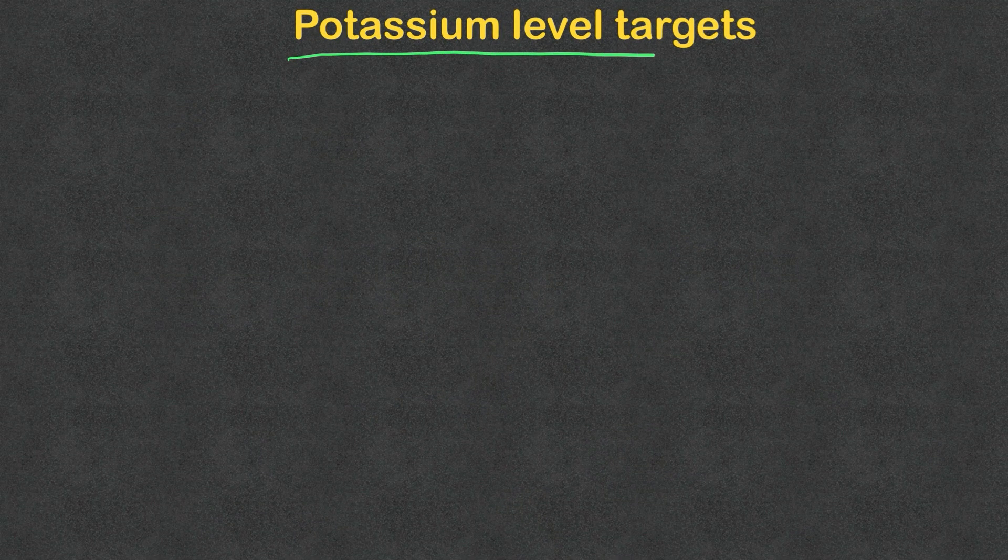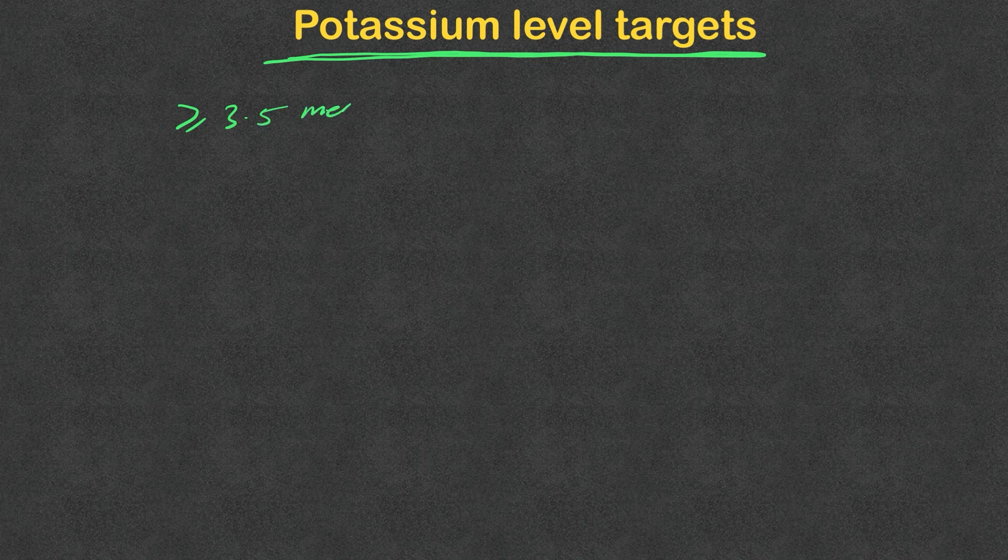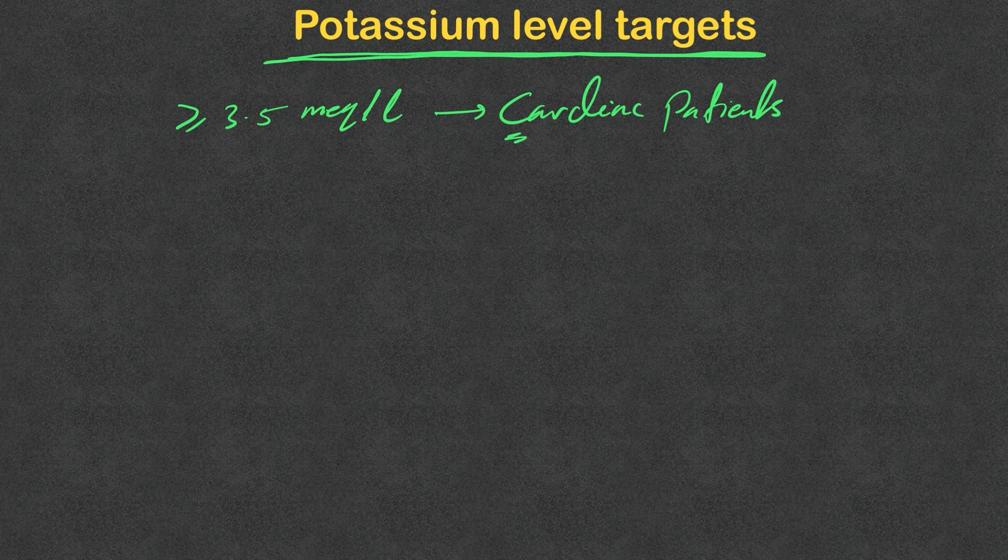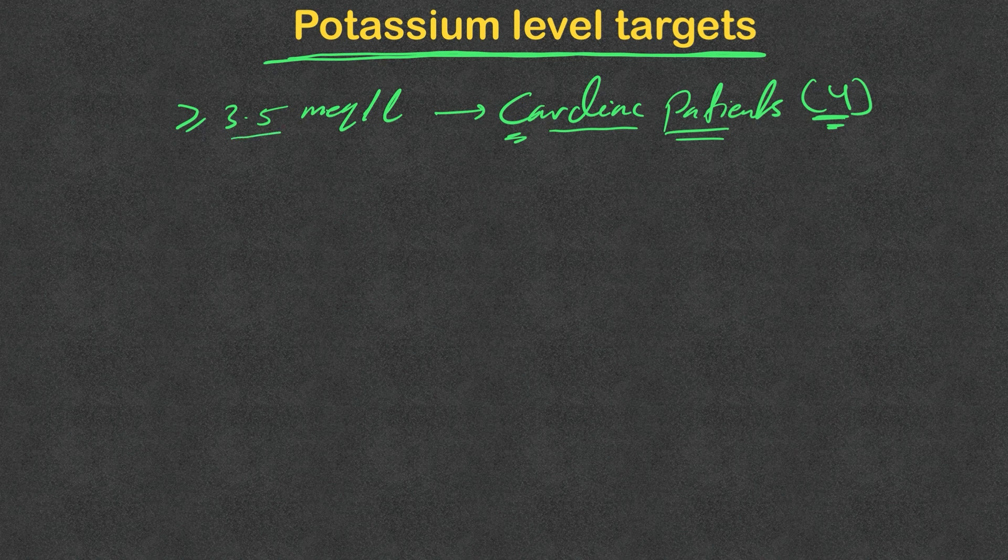What potassium levels are we trying to achieve when treating hypokalemia? In most patients, including cardiac patients, we're trying to keep the potassium equal or above 3.5 milliequivalents per liter. Again, this includes cardiac patients. I know a lot of you heard or already practice that we need to get this to 4 milliequivalents or equal or above 4 in cardiac patients, but there is really no strong evidence of that. Just remember this number and you should be safe.